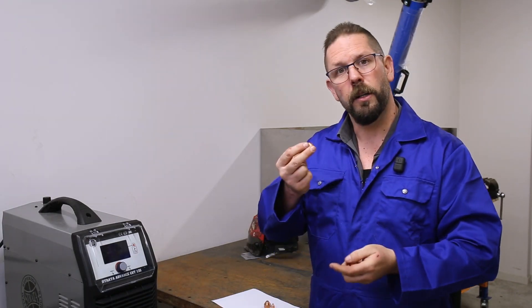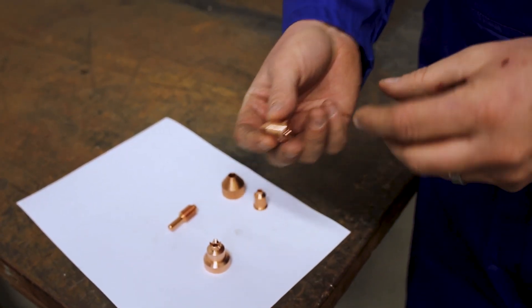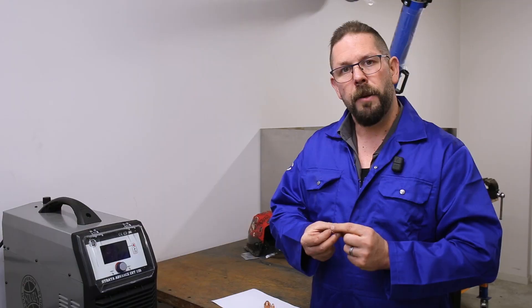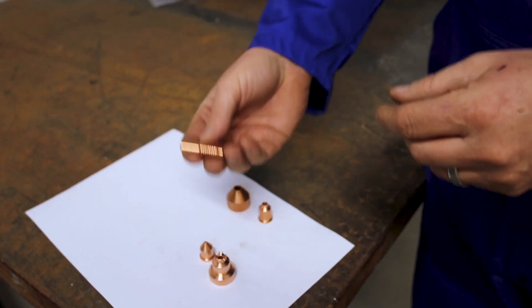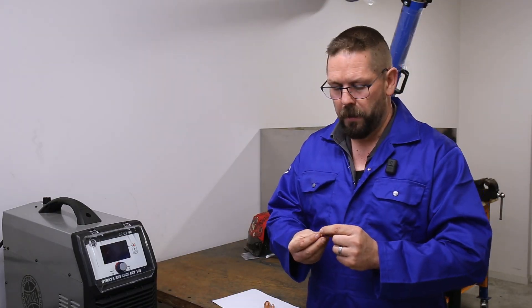After that we have a nozzle or a tip. 45 amp, 65, 85 and 105. We use different sizes depending on the plate thickness we're cutting. The electrode underneath stays the same. These parts do wear, but they're cheap to buy and easy to replace.